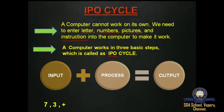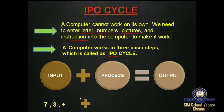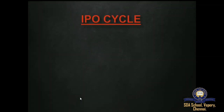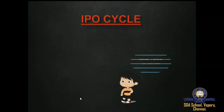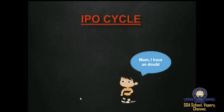The input is the data and instructions we enter into the computer by an input device such as a keyboard and mouse. For example, 7 and 3 are the data and the plus sign is the instruction given to the computer for addition. The process step is where the CPU works on the data — 7 plus 3 — and gives the output 10. The output is the final result displayed on the monitor.